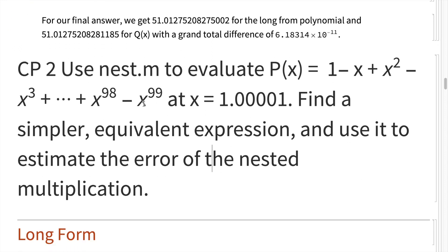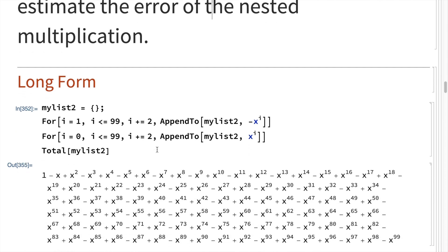Next up, computer program two: use nest to evaluate p of x equals 1 minus x plus x squared minus x cubed, continuing out to x to the 98th minus x to the 99th at x equals 1.00001. Find a simpler equivalent expression and use a test to measure the error of the nested multiplication.